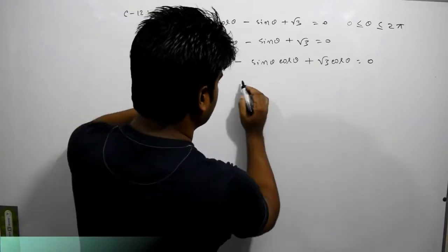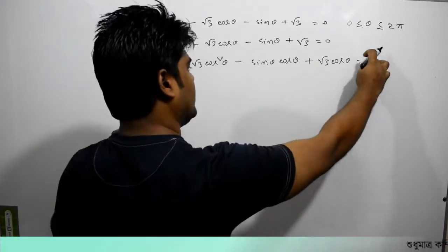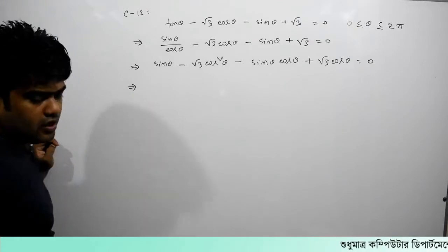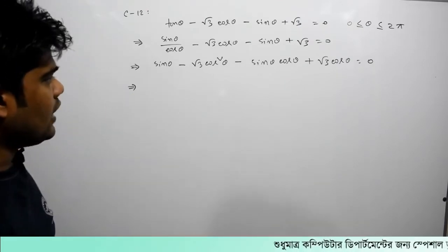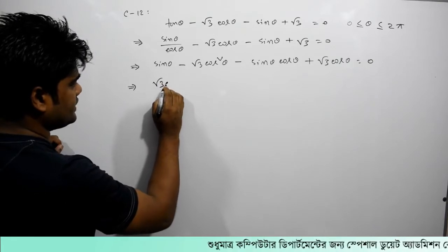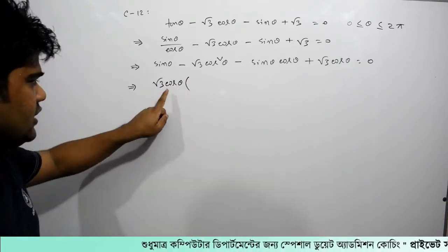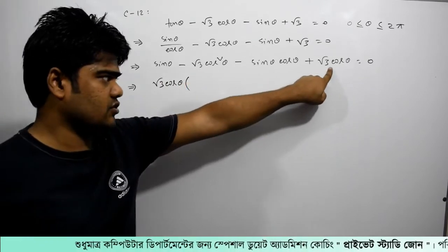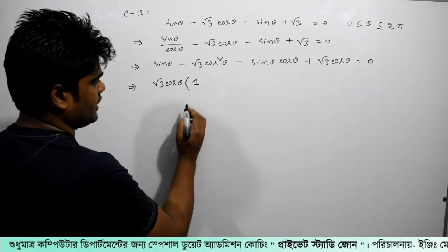First case: we are going to see that sin θ is equal to 0. Second, we are going to see that sin θ minus root 3 cos θ is equal to 1.